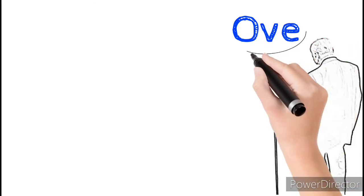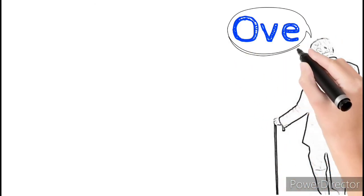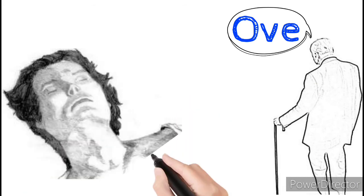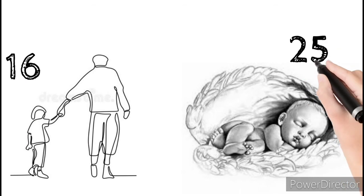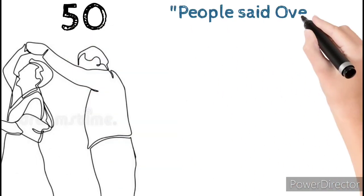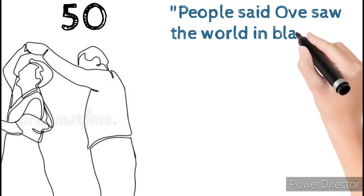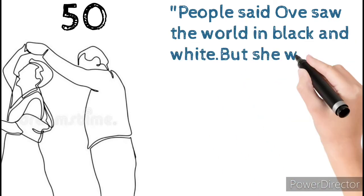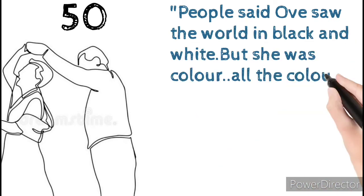The story is about Ove, a 59-year-old man who lost his mother at 10, father at 16, his unborn child at 25, and his wife at 50. People said Ove saw the world in black and white, but see, his wife was color, all the color he had.